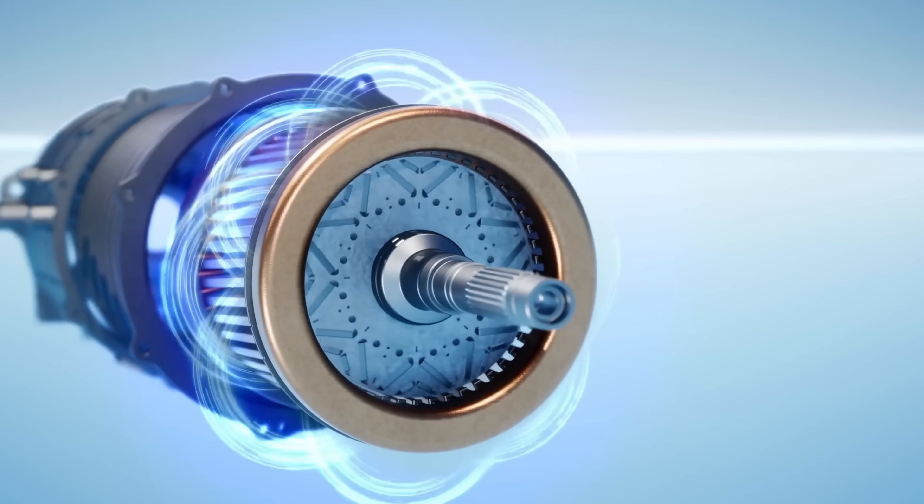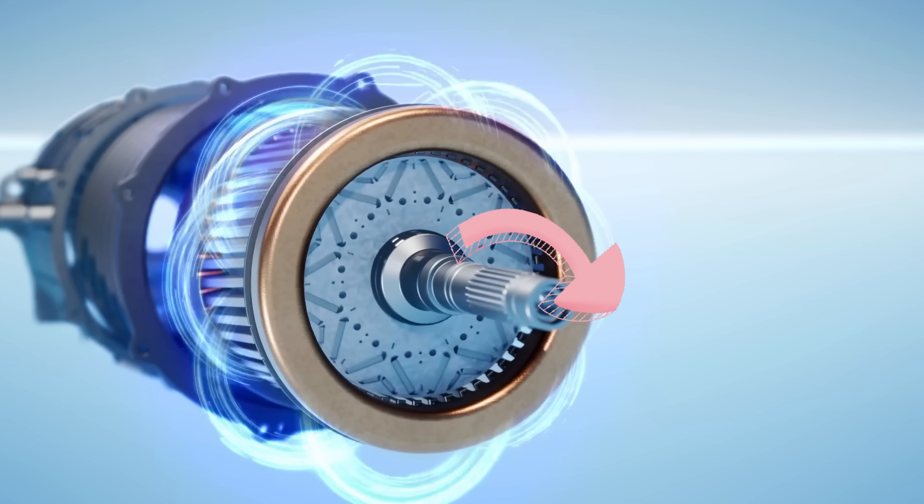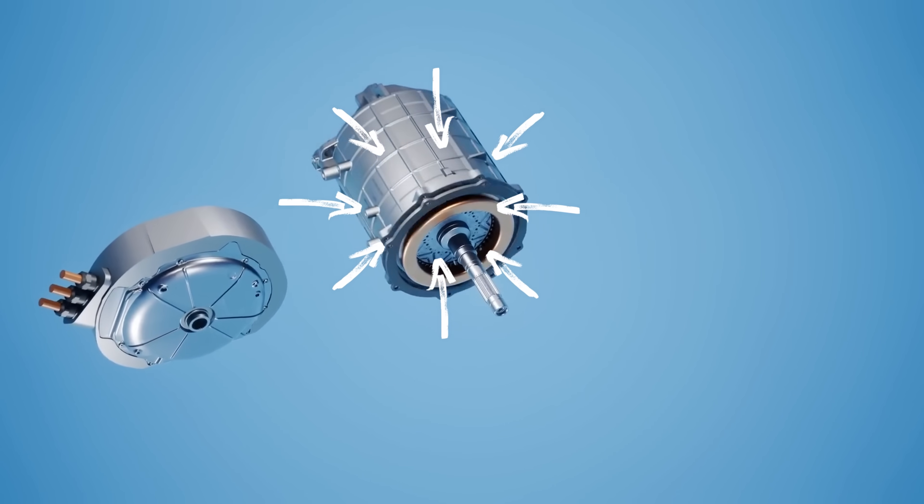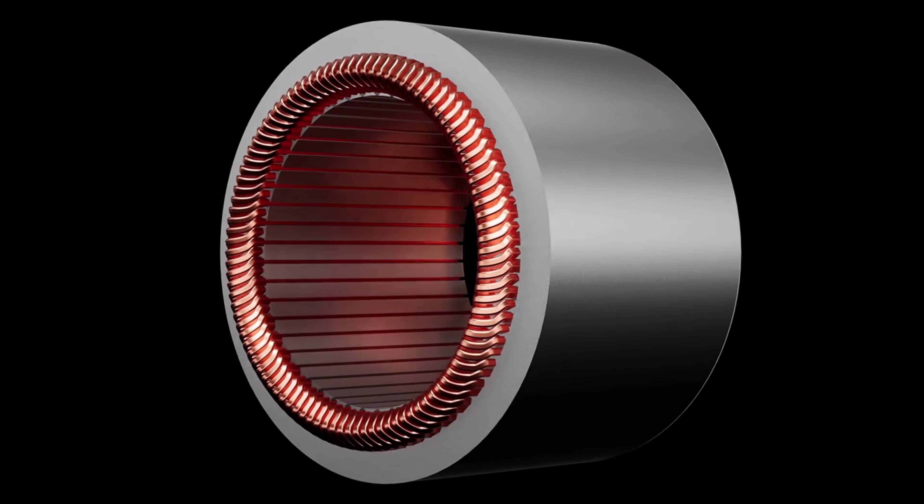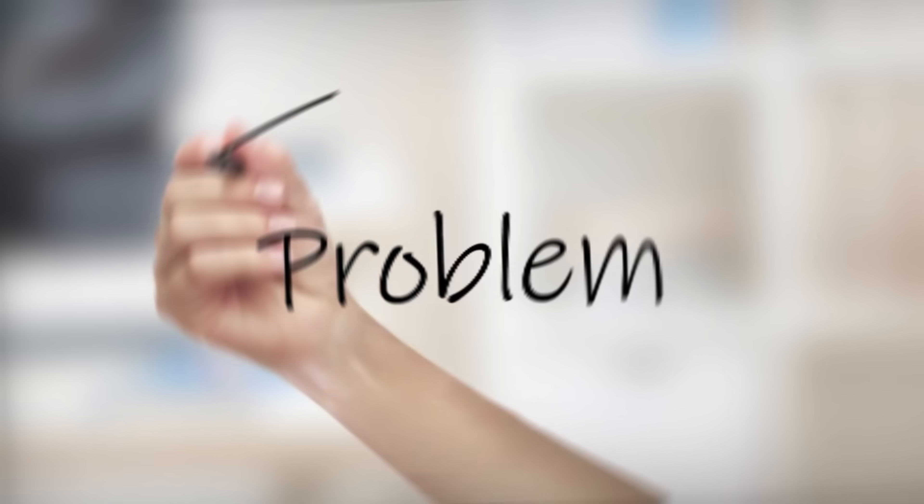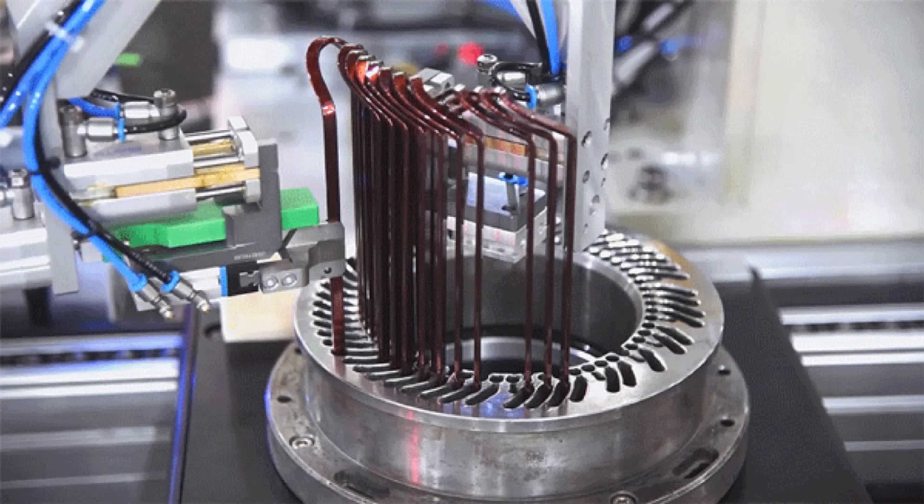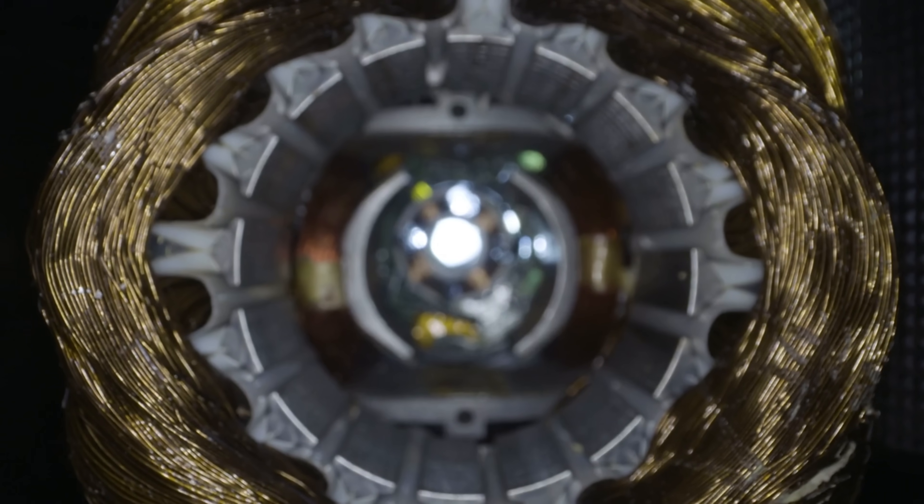These motors generate torque by having magnetic flux travel radially, perpendicular to the axis of rotation. Think of a spinning cylinder surrounded by coils. The problem? As performance demands increase, these motors get heavier, bulkier, and less space efficient.